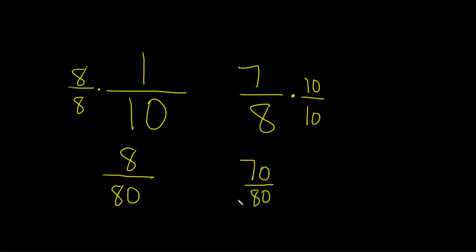And so now we have what's called like fractions because the denominators are the same. So whenever you have like fractions, you just compare the numerators. So 8 is smaller than 70. So this fraction is less than this fraction here. And that would be the answer.